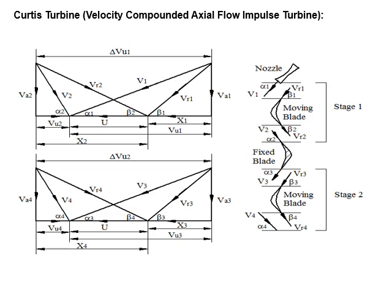From the velocity triangle geometry, x1 can also be expressed as Vu1 minus u, since the total distance is Vu1 and subtracting the blade speed u gives x1. Therefore x1 equals Vu1 minus u. Similarly, x2 equals Vu2 plus u, since x2 is measured on the other side.